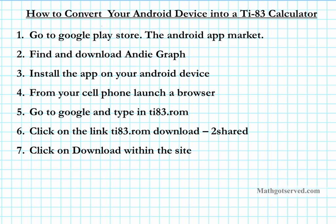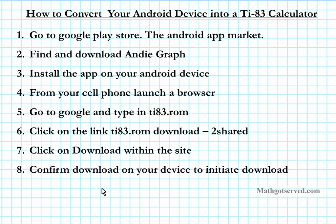After you click on that link, it will take you to the two-shared site for downloading the TI-83.rom. Within the site, you are going to click on download. There are going to be two options — either to play or to download. You want to download the TI-83.rom into your cell phone or android tablet. A menu window will come up on your phone asking if you want to download the TI-83.rom to your SD card, and you confirm to initiate the download.